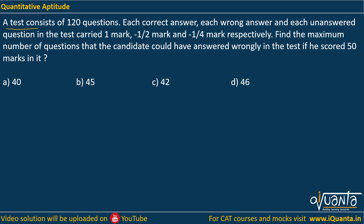The question is: a test consists of 120 questions. Each correct answer, each wrong answer, and each unanswered question in the test carried one mark, minus half mark, and minus 1/4 mark respectively. Find the maximum number of questions that the candidate could have answered wrongly in the test if he scored 50 marks in it.